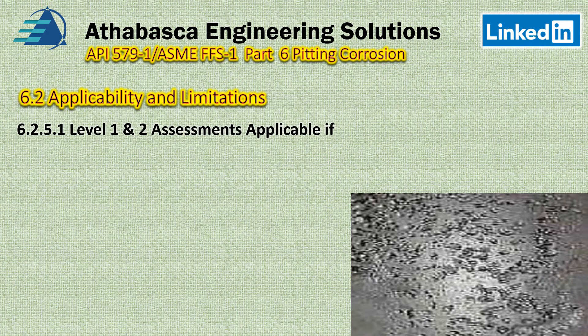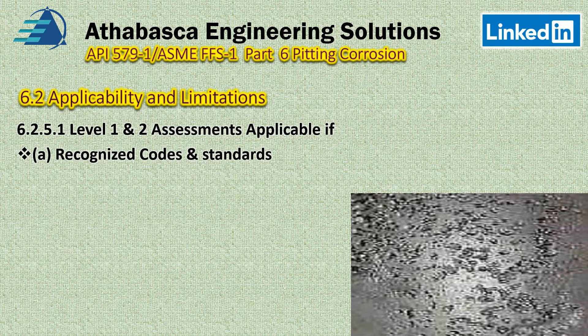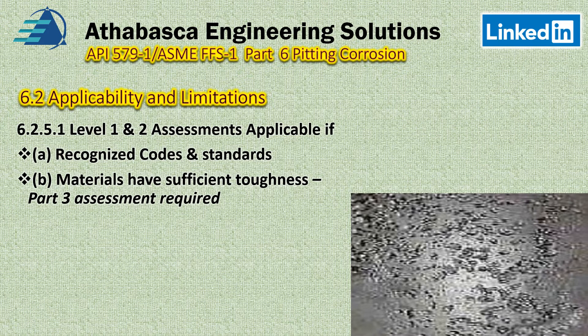Level 1 and 2 assessments are applicable only if the original design was designed to a recognized code and standard. In API 579 there's a comprehensive list including the pressure vessel code Section 8 Division 1 and B31.3. If you're working outside that listing you cannot use level 1 or 2. The materials must also have sufficient toughness — you need to look at ductile transition properties, and there is related content on MDMT. It can be very sensitive to the thickness of a part. Level 1 and 2 can also be used if you have cyclic service issues.